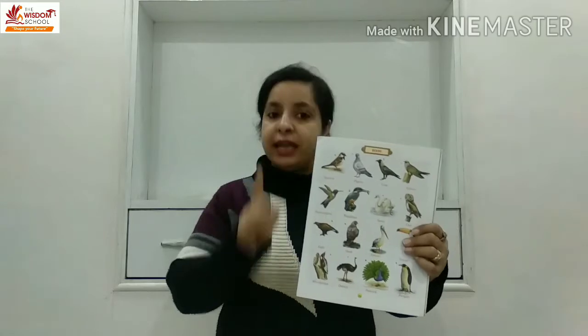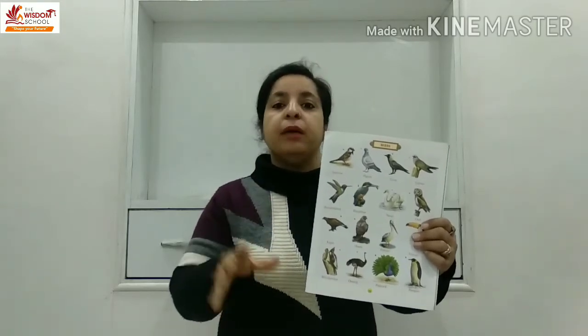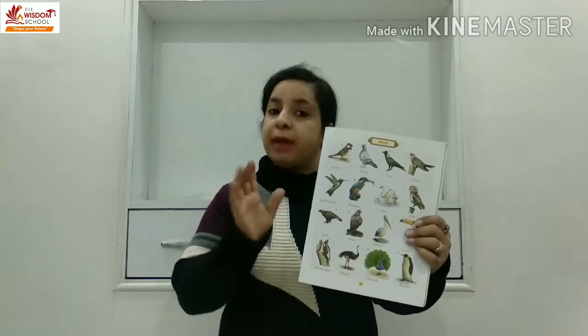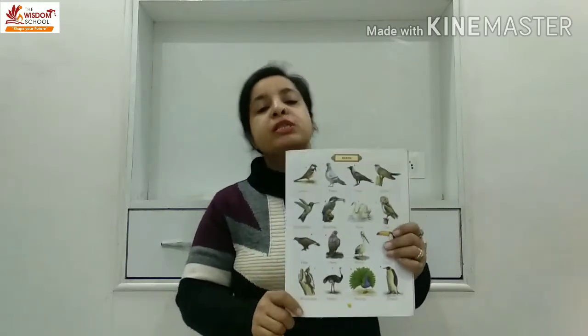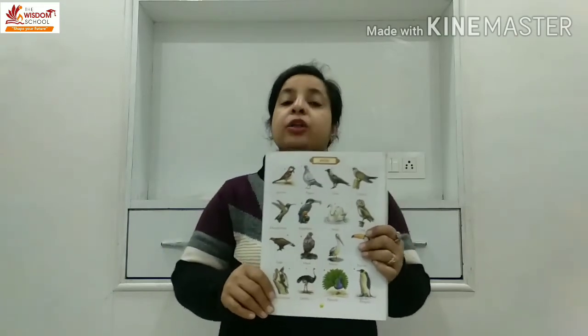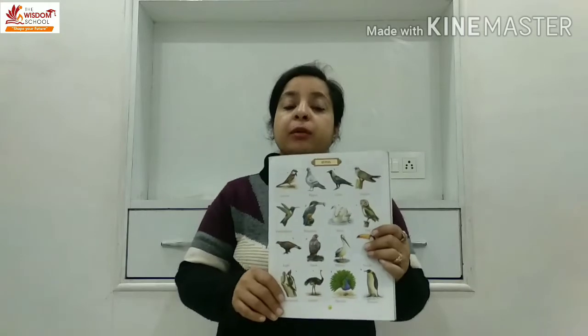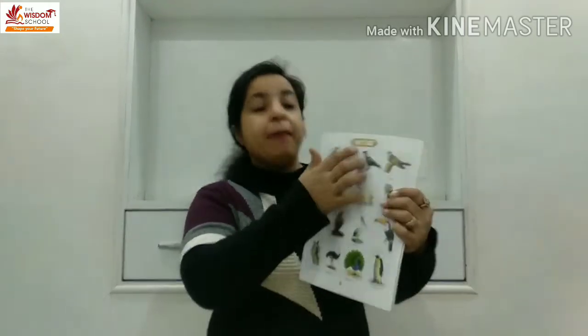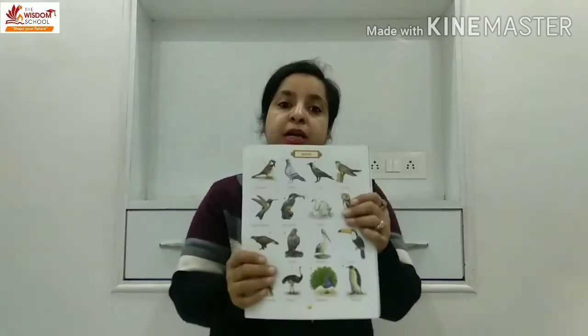Kuch birds aise hote hain, one or two birds aise hote hain jo fly nahi karte, like penguin — penguin fly nahi karta. Ostrich — ostrich fly nahi karta. Main aapko bataungi inke baare mein. Lekin mostly birds aise hote hain jo fly karte hain. Aap apne aaspas dekhte bhi ho. Pigeon toh aap log dekhte hi hoge na — kabooter jisko bolte hain, woh bird hai. Toh birds kya hote hain bata? Pakshi.